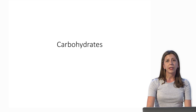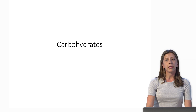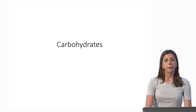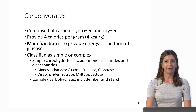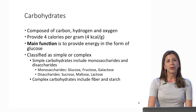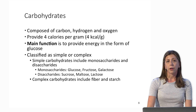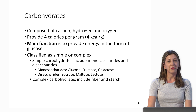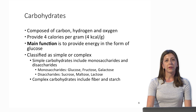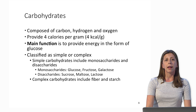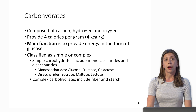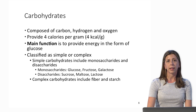Now I want to spend some time introducing each of these main essential nutrients. The first is carbohydrates. Structurally, carbohydrates are composed of three elements: carbon, hydrogen, and oxygen. They give us calories — that's why it's termed a macronutrient — providing four calories per gram. We'll look at a food label later to understand how we can figure out how many calories are coming from carbohydrates.